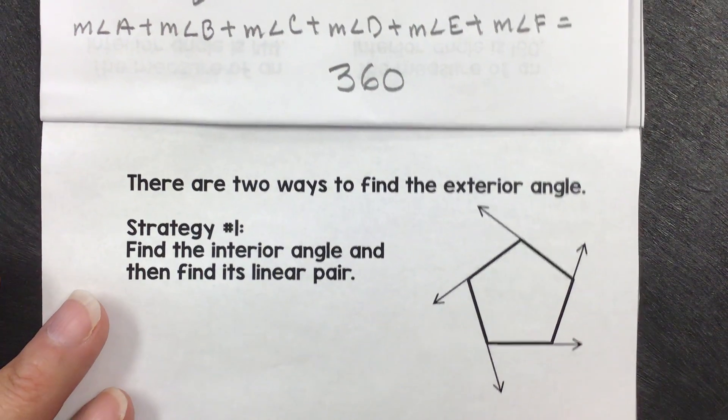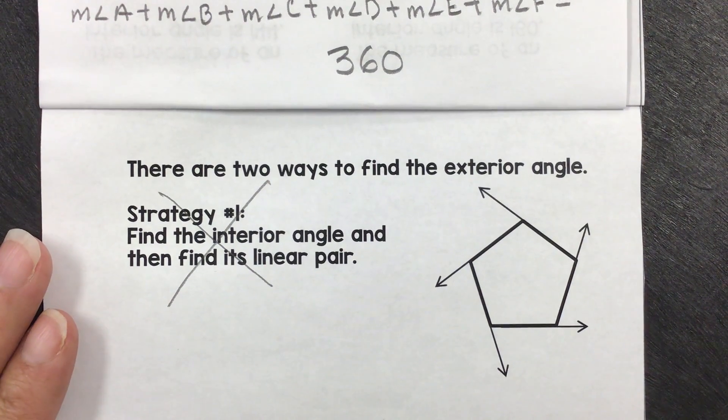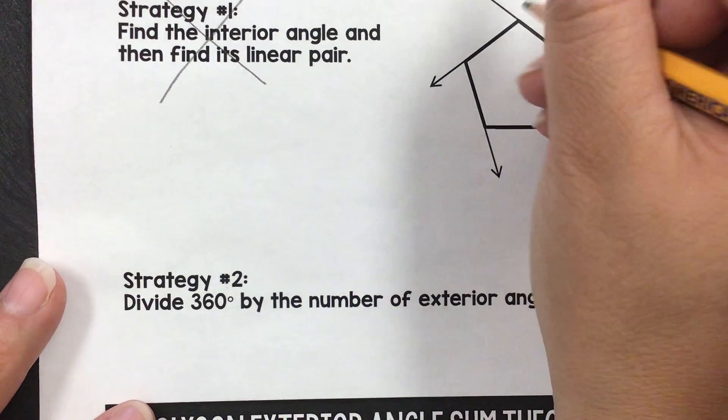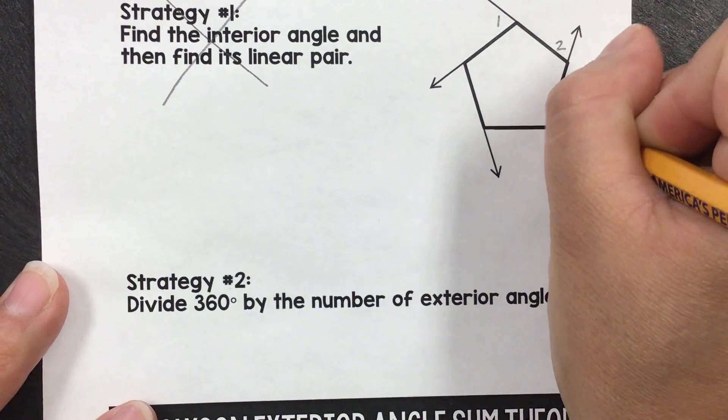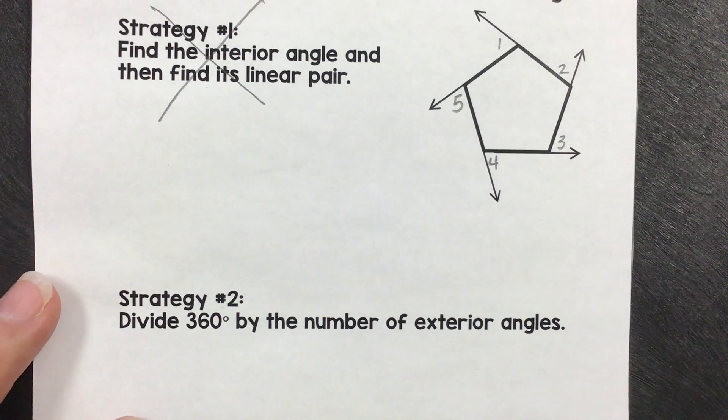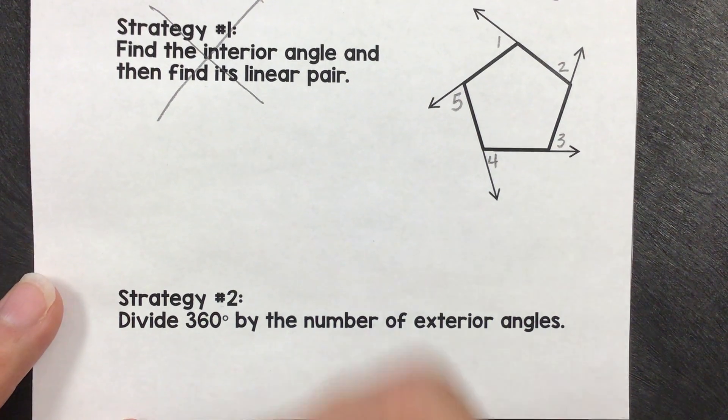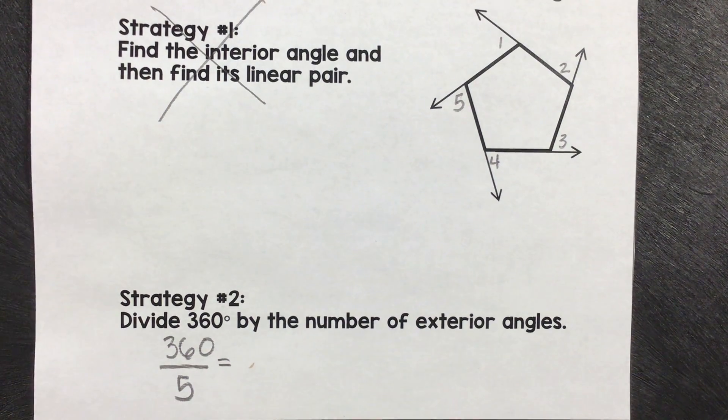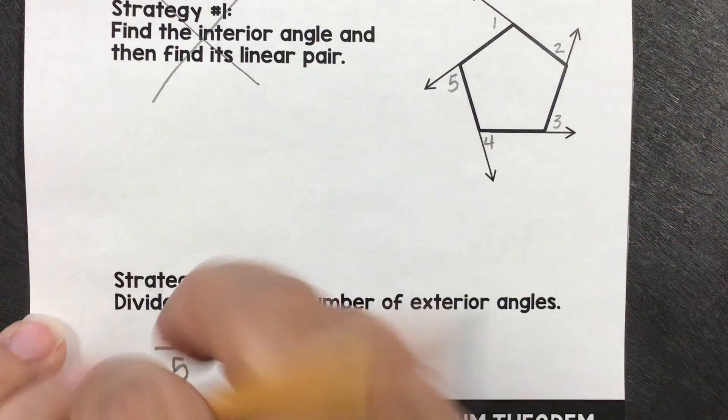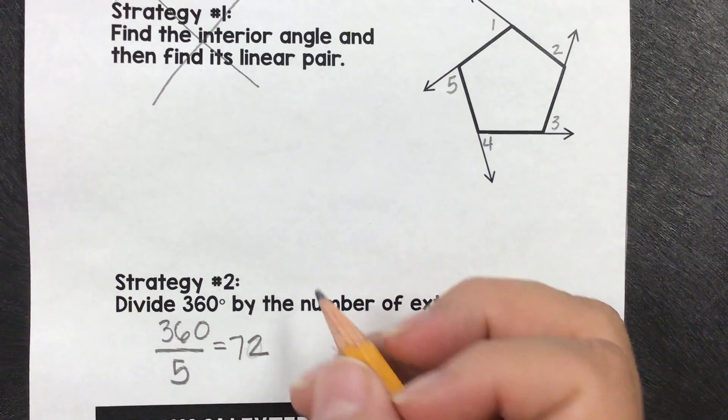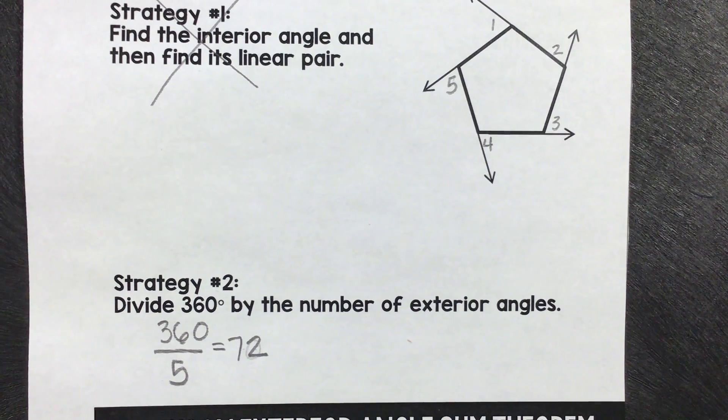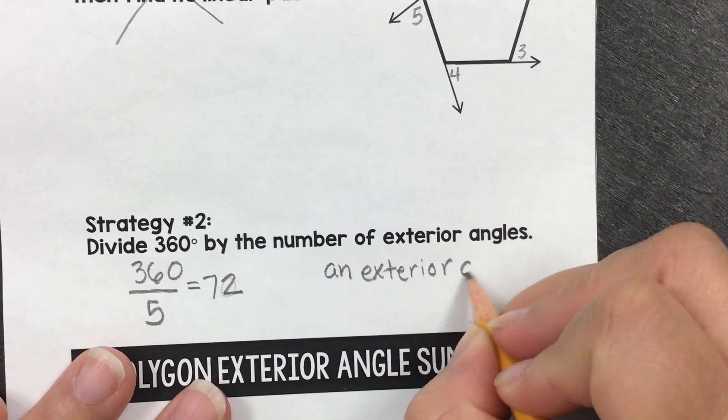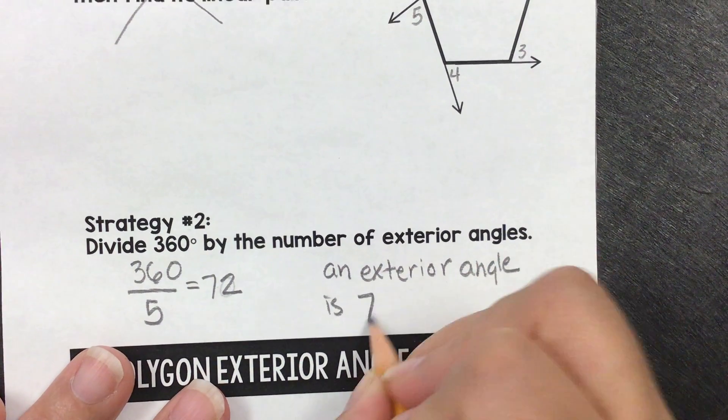There are two ways to find the exterior angles. We will not worry about the first method. The second method is to divide 360 by the number of exterior angles. And so there's 1, 2, 3, 4, 5 exterior angles. You can also count them by the number of sides. So this one would be 360 divided by 5, which gives you 72. That means that just one of these exterior angles, so an exterior angle, is 72 degrees.